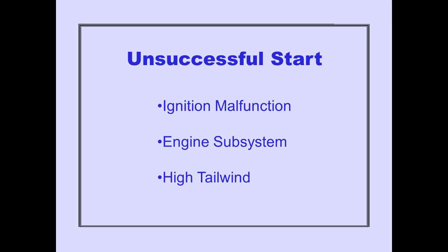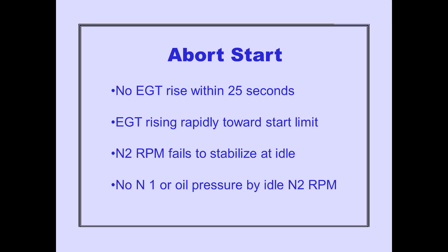An unsuccessful start may be due to an ignition malfunction, an engine subsystem problem, or a high tailwind. The start should be aborted if there is no EGT rise within 25 seconds, EGT is rising rapidly toward the start limit, N2 RPM fails to stabilize at idle, or no N1 rotation or oil pressure is noted by idle N2 RPM.